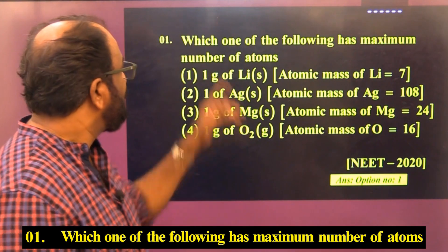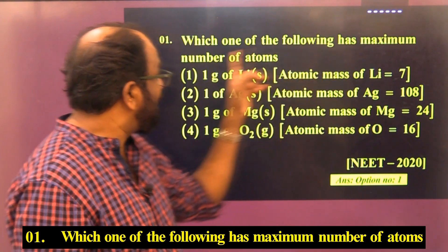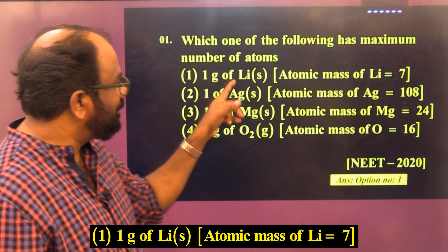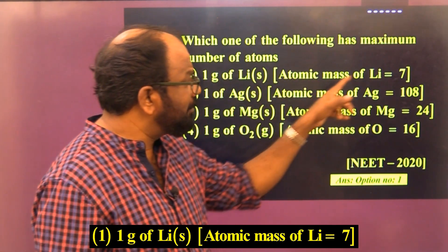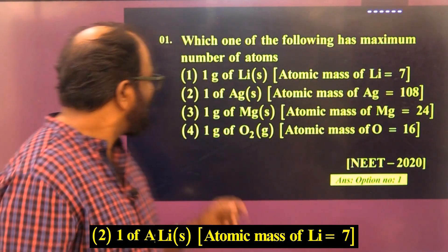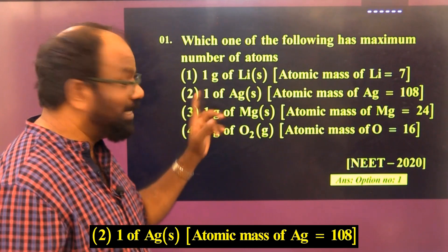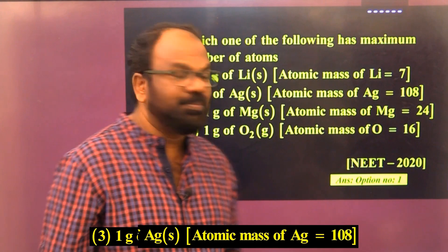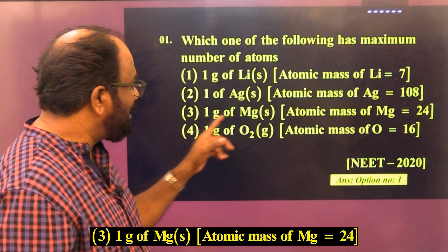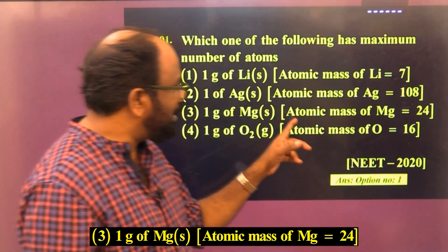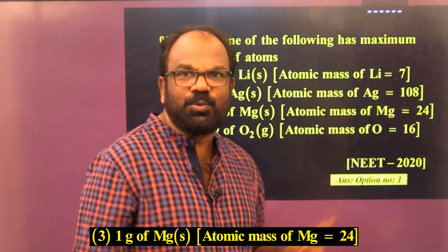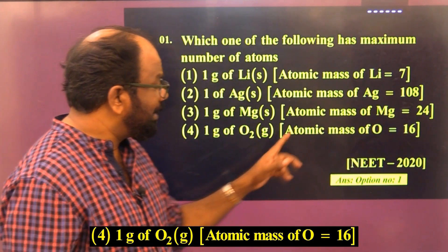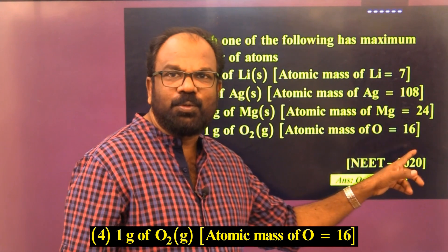Which one of the following has the maximum number of atoms? Option 1: one gram of lithium (atomic mass of lithium = 7). Option 2: one gram of silver (atomic mass of silver = 108). Option 3: one gram of magnesium (atomic mass of magnesium = 24). Option 4: one gram of oxygen (atomic mass of oxygen = 16).